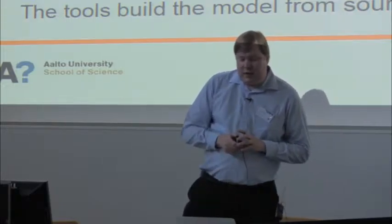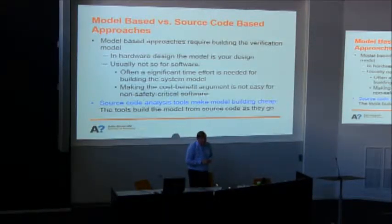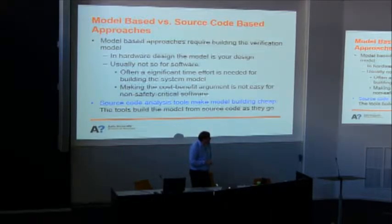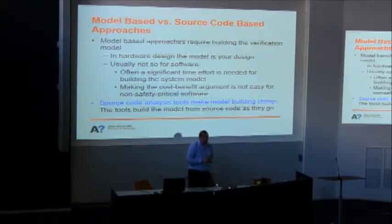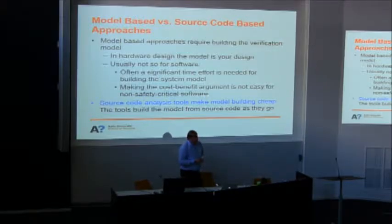Making the cost-benefit argument is not easy for non-safety-critical software. I've worked with model checking safety-critical systems, where you can afford to put a lot of effort on model building. But this is not always the case for software. One of the nice things about source code analysis tools is that they make model building cheap — we build models as we go. Each line of code executed gets added lazily, so source code that never gets executed never ends up in the model.